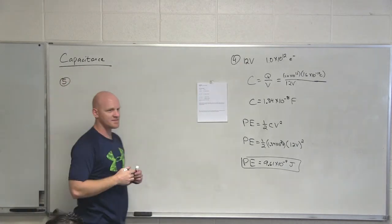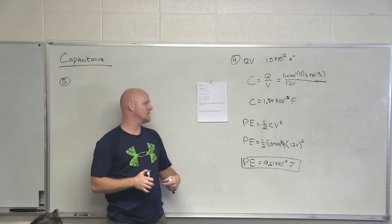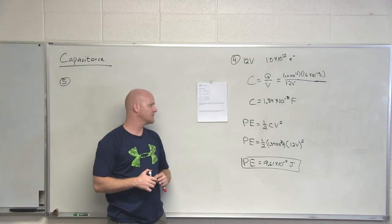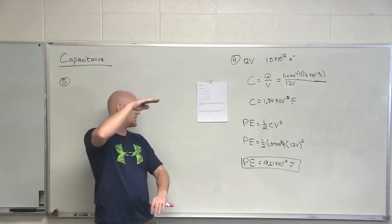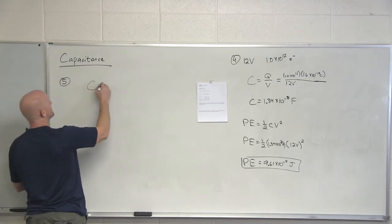Fantastic. Question number five is a little more conceptual question, not much of a calculation. It says the lengths of the sides of each of the plates of a square parallel plate capacitor are doubled, and so is the distance of separation between the two plates. What is the effect on its capacitance?